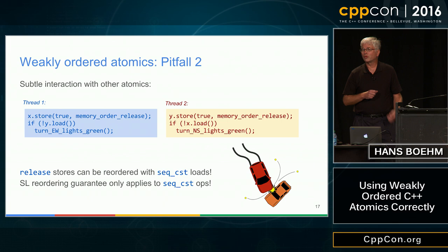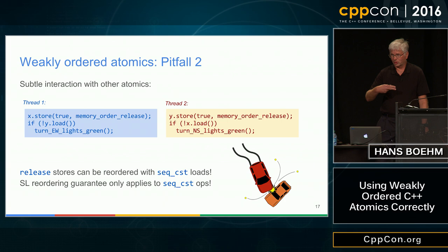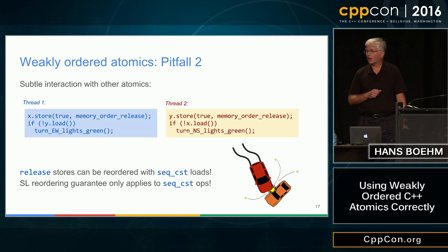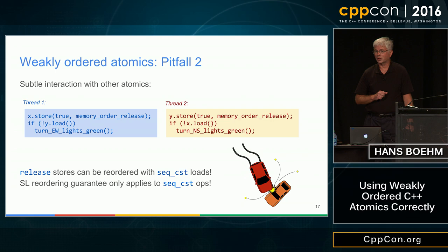Now getting into weakly ordered atomics: the ordering constraints are really quite subtle. A concrete pitfall is attempting to relax the traffic light example by relaxing the store operations to memory_order_release while keeping loads sequentially consistent. Many people have the idea that using a sequentially consistent operation orders the other weakly ordered operations — that's not generally true. Using memory_order_release on the store gives away the SL guarantee. The compiler and hardware are no longer required to preserve the order of the store and the load, so the compiler may do both loads first, see both as false, then execute both stores — and both threads turn the light green.